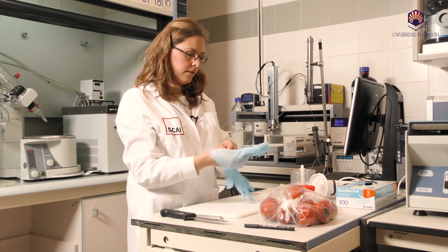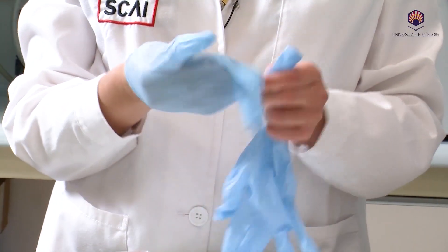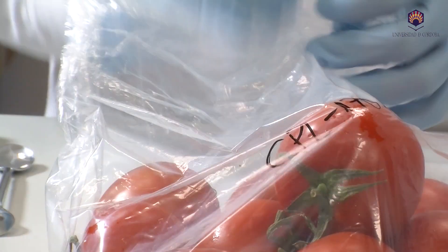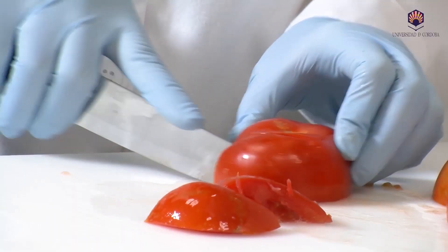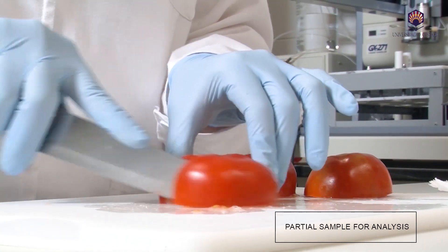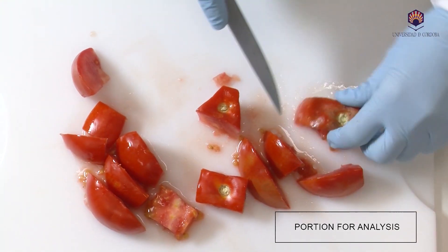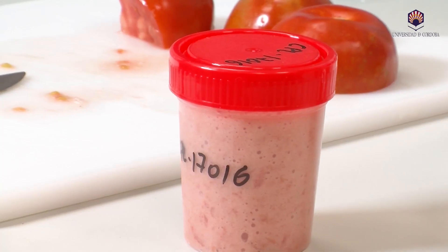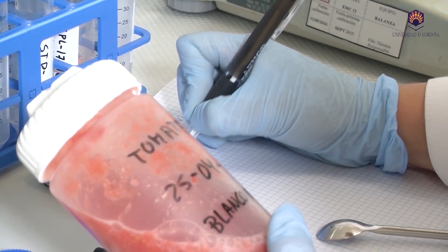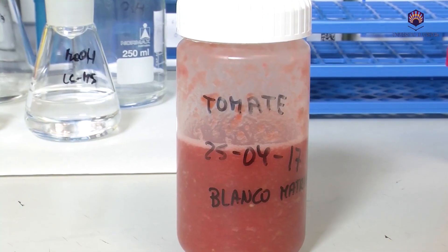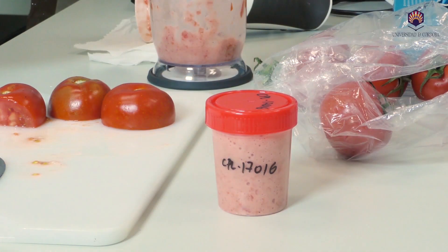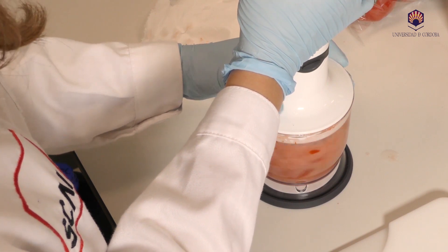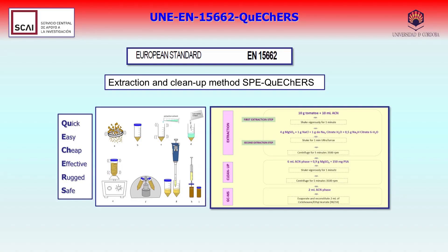Traceability in the laboratory is very important. Thus, the first thing that should be done in the lab is to verify its correct identification. According to the UNE 15662 standard, the partial sample is first prepared for the analysis. It is divided into quarters, and then the portion for analysis is blended for its complete homogenization. For qualitative analysis, it is necessary to prepare both a matrix blank and the sample to be analyzed, following the procedure described in the UNE 15662 standard. The extraction and purification procedure with dispersive solid phase extraction, or DSPE, can be seen in the image.